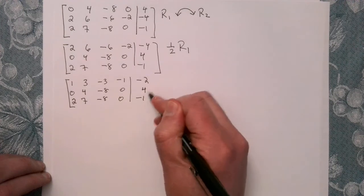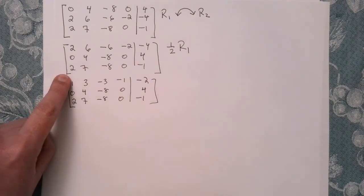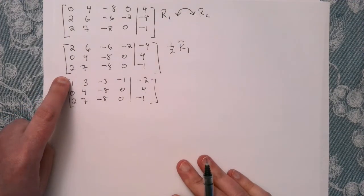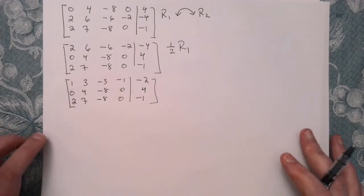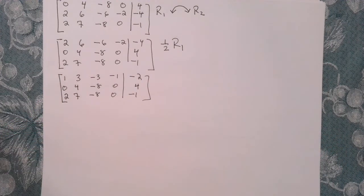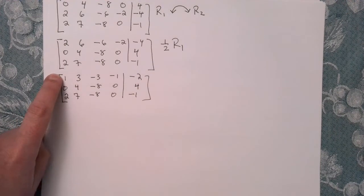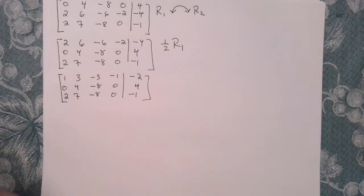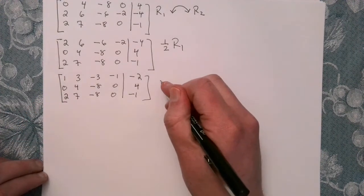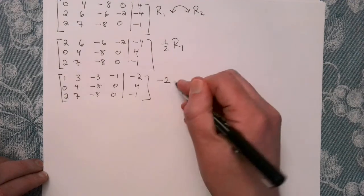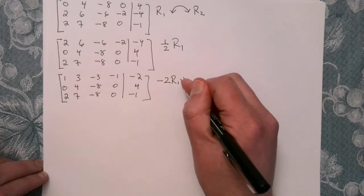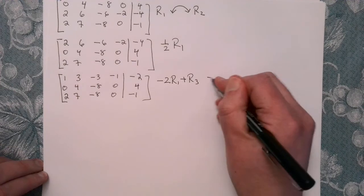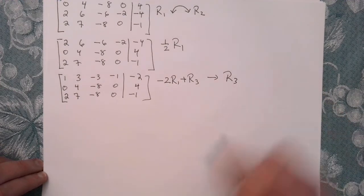Now I've got my leading one — my pivot in this position. I can use that pivot to get a zero here. Remember, in reduced row echelon form I would like all other entries in the column other than the pivot to be zero. So let's do minus 2 times row 1, add it to row 3, and that sum will replace row 3.